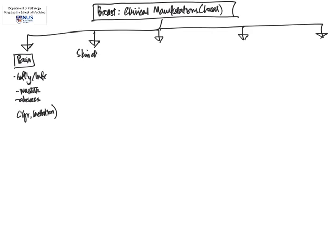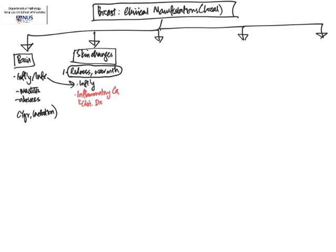The next main symptom is skin changes. Any abnormalities noticed in the skin can signify underlying disease. For example, if there is redness or warmth in the skin, this can be associated with inflammatory or infectious conditions. But we must also bear in mind the possibility of an inflammatory carcinoma. This is a clinical diagnosis, not made on histopathologic examination, so it's not a histologic variant.